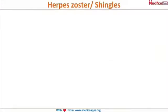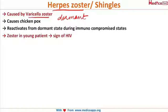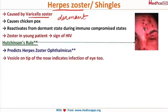Herpes zoster is the disease caused by the varicella zoster virus, which also causes chickenpox in children. The virus remains dormant within the nerve roots and reactivates when there is immunological compromise. If herpes zoster occurs in a young patient, you should immediately suspect HIV, since young patients are not typically immunocompromised like the elderly or those on cancer chemotherapy.